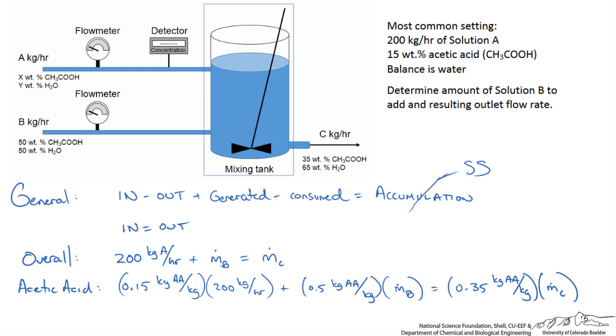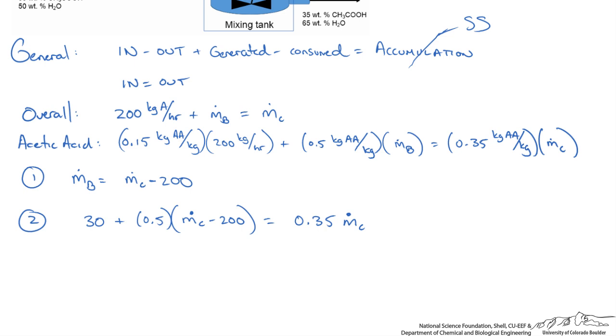Solve using whatever method you like. You should get the resulting equation shown here. Solving for MC we get 466.7 kg per hour and 266.7 kg per hour for MB.